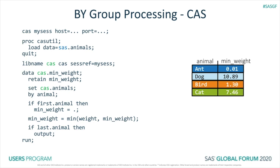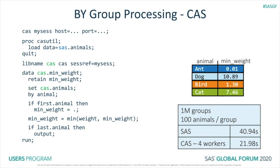So how does the performance compare? With a million groups and 100 animals per group, SAS took about 41 seconds and CAS took about 22 seconds. So this was simple and fast.